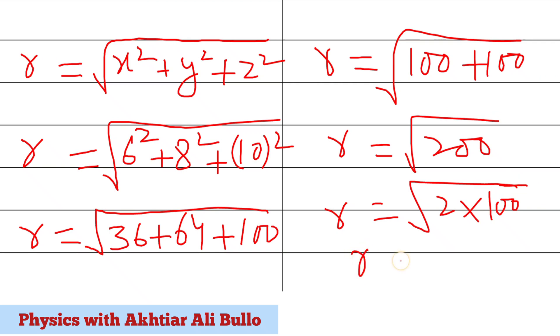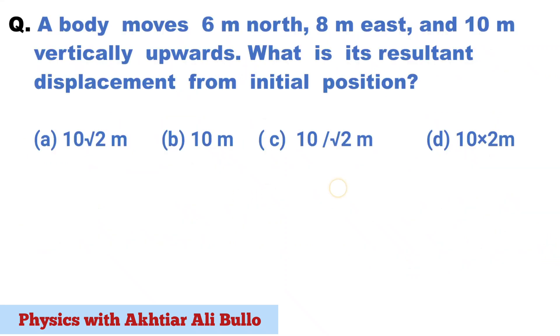So r will be obtained as 10√2 meters. The correct option will be (a) 10√2 meters. Thank you.